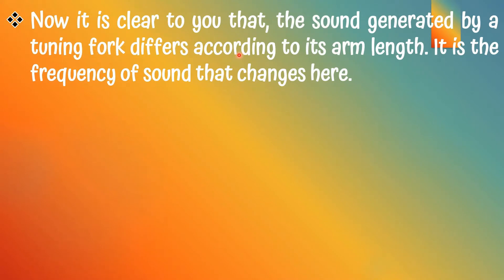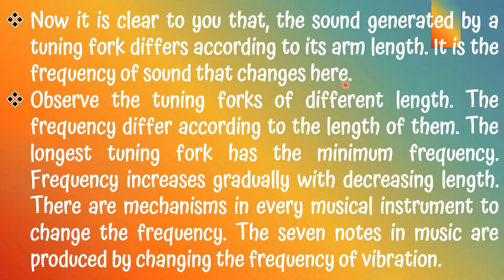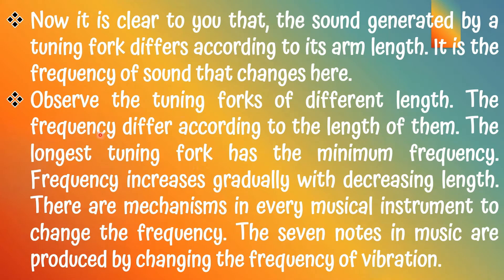It is clear that the sound generated by a tuning fork differs according to its arm length — it is the frequency of sound that changes. The longest tuning fork has the minimum frequency, and frequency increases gradually with a decrease in length. There are mechanisms in every musical instrument to change the frequency. The seven notes in music are produced by change in the frequency of vibration.